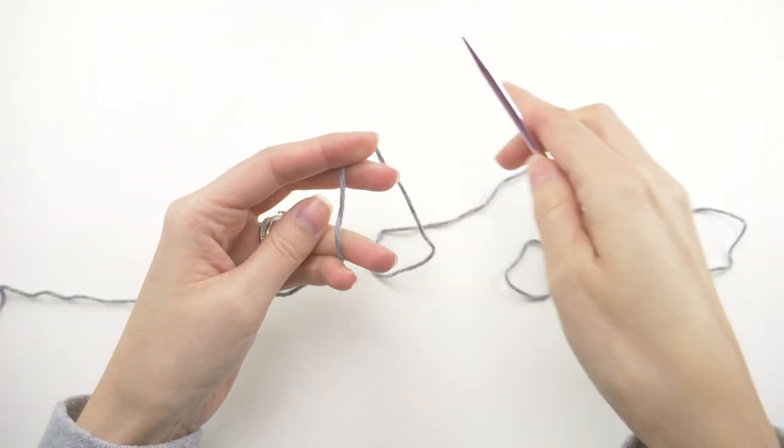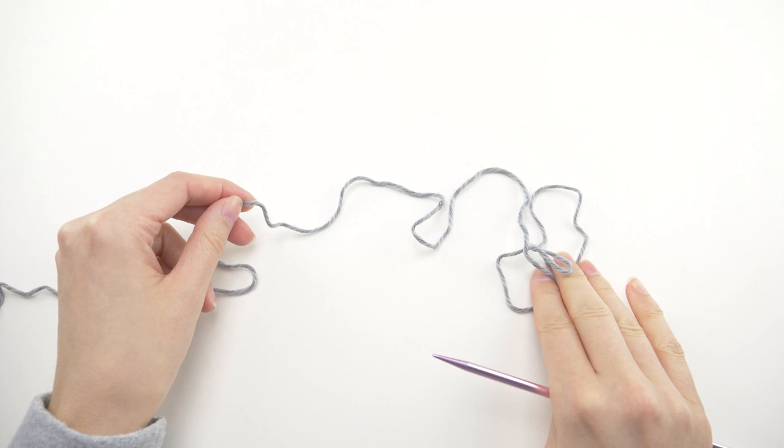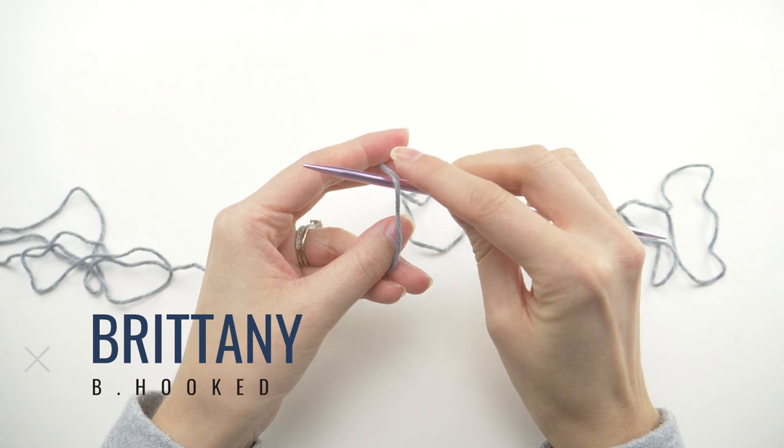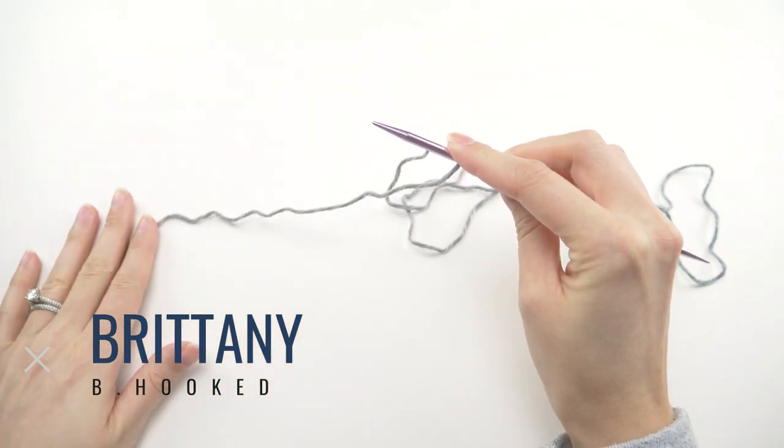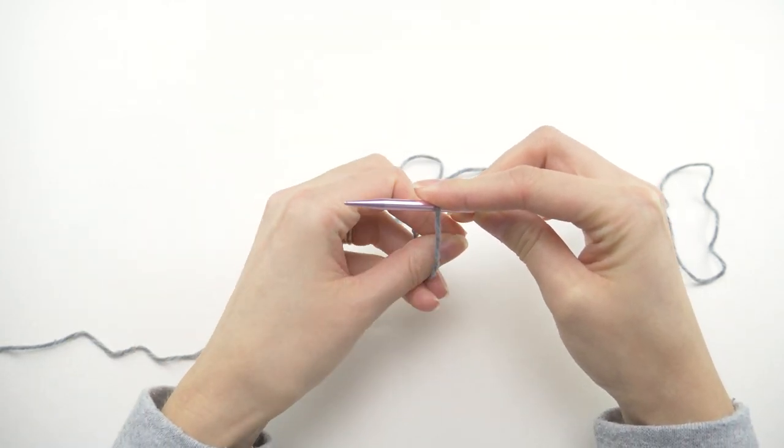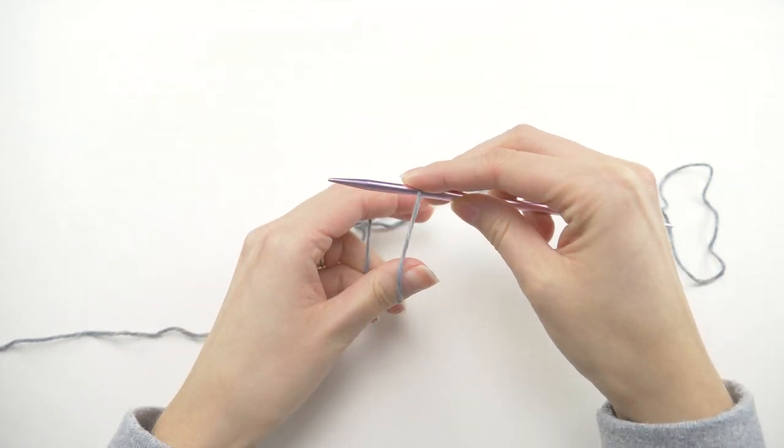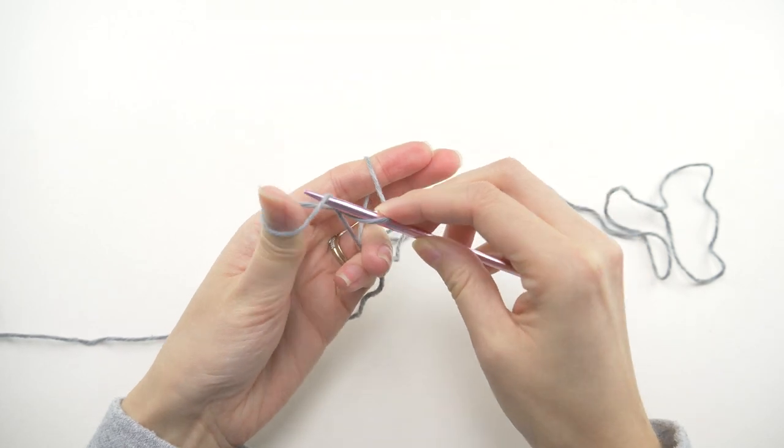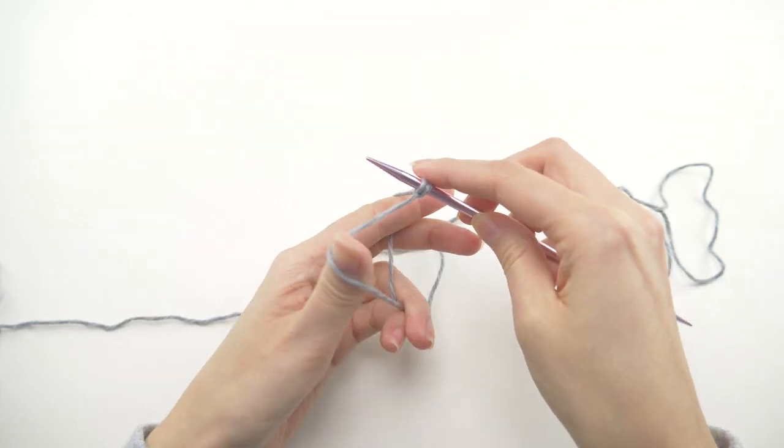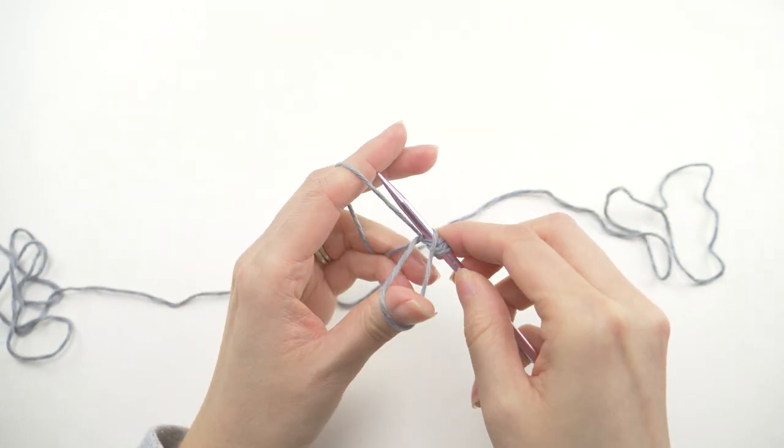For this one, we'll work the long tail cast on, and if you're already familiar with how to do that, go ahead and cast on 71 stitches. For everyone else, go ahead and get yourself a nice long tail, remember I'm making a swatch so make sure your tail's much longer than mine, and place the yarn over the needle and gather it in your hands like this. Then swing the needle down and grab the loop on your thumb, swing it up and grab the loop on your index finger, then release the thumb loop over the tip of the needle. That's it. Now you'll keep going until you have 71 loops on your needle.